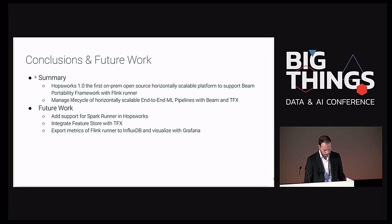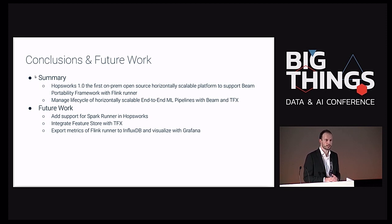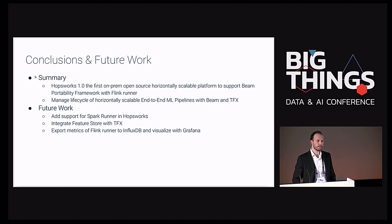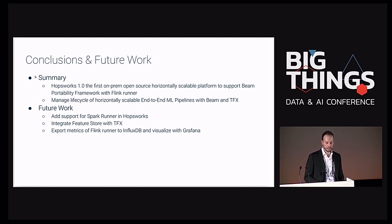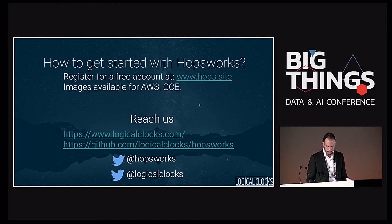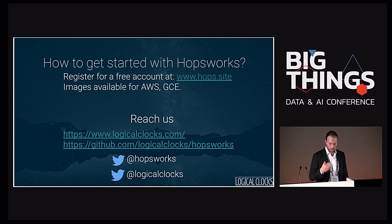In conclusion: HopsWorks 1.0 is the first on-prem horizontally scalable platform to support the Beam and Flink portability framework, which is very important for machine learning because it brings Python support to all these runners. We manage the lifecycle of horizontally scalable end-to-end ML pipelines with Beam and TFX. Future work includes finishing Spark runner integration, integrating the feature store with TFX, and exporting Flink runner metrics to InfluxDB for visualization with Grafana. You can get a free account on HopsWorks.ai to try it out, or get an image on AWS or deploy on GCE. Thank you.